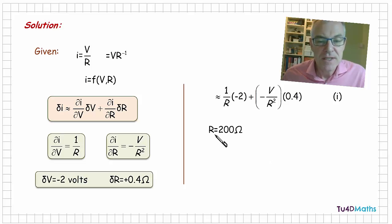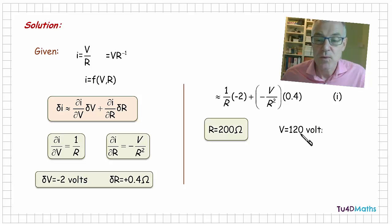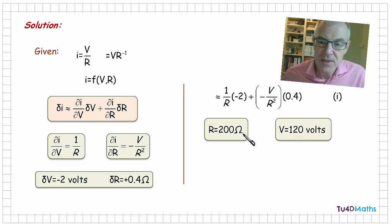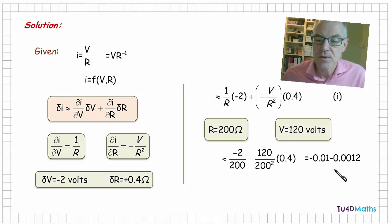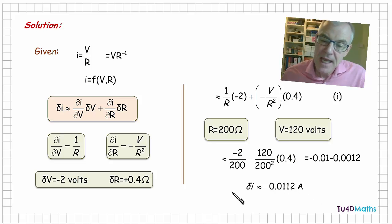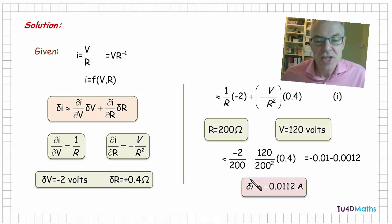Now we know that the initial resistance is 200 ohms and the initial voltage is 120 volts. So if we substitute r and v, we get the following. And if we calculate this, we get minus 0.01 minus 0.0012, which is minus 0.0112 of an amp. So in other words, the approximate change in the current is a decrease of 0.0112 of an amp.